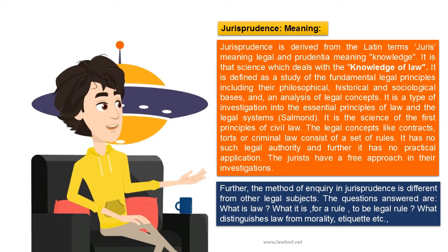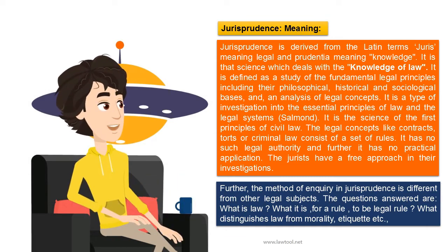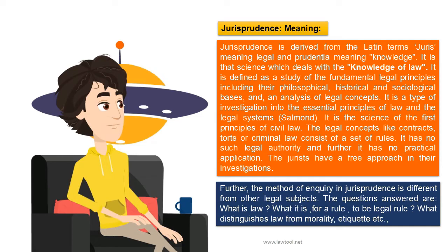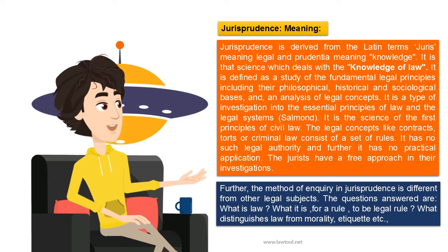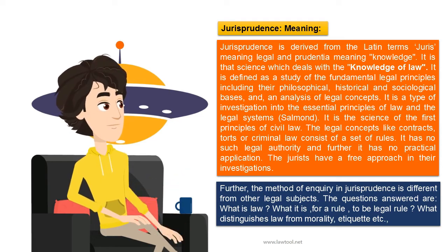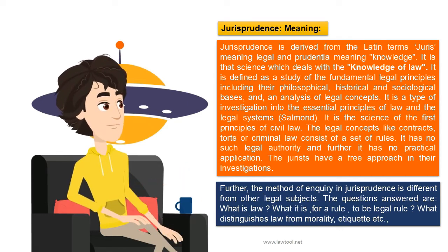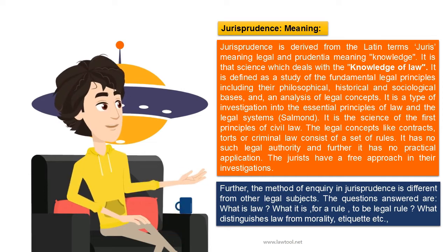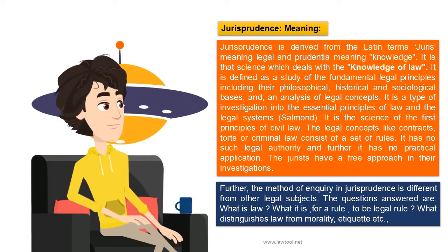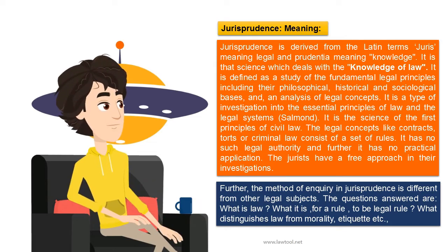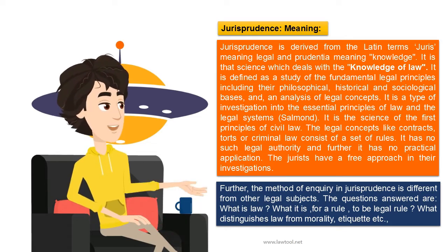Welcome to Law Tool. Today's topic is jurisprudence. Jurisprudence is derived from the Latin terms 'juris,' meaning legal, and 'prudentia,' meaning knowledge. It is the science which deals with the knowledge of law. It is defined as a study of the fundamental legal principles, including their philosophical, historical, and sociological basis, and an analysis of legal concepts. According to Salmond, it is a type of investigation into the essential principles of law and the legal system — the science of the first principles of civil law.